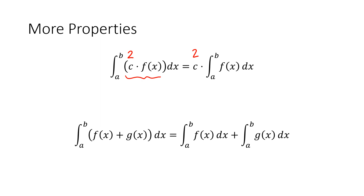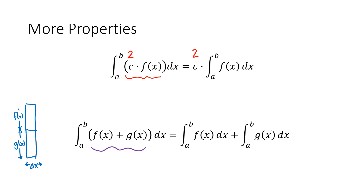If I take two functions and add them together — f of x plus g of x — thinking about areas and rectangles, if the y value is the sum of two functions, then the area is the sum of the two areas. Think of two rectangles stacked on top of each other: the width is delta x, the height of one is g of x and the other is f of x. The areas are g of x times delta x and f of x times delta x, so the big rectangle's area is f of x plus g of x times delta x.